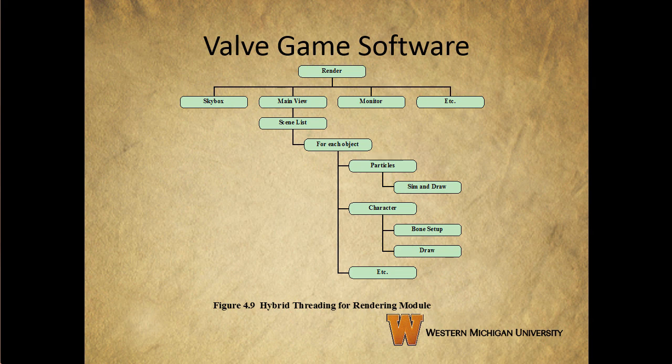Valve Software has done some very interesting things in the development of various popular games, as well as the Source engine — the animation engine used for its games, which is also licensed by other game developers. The explanation of how this works appears on pages 169 and 170 of your textbook. I would definitely recommend reading through that section, as it gives a great example of how these concepts can be applied in a real-world way.